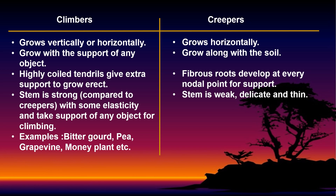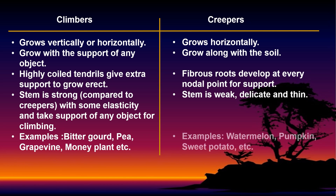Examples of climbers are bitter gourd, pea, and grape vine. Whereas examples of creepers are abundant.